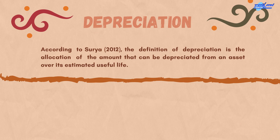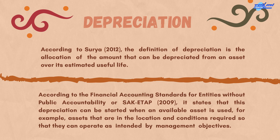Depreciation. According to Surya, the definition of depreciation is the allocation of the amount that can be depreciated from an asset over its estimated useful life. According to the financial accounting standards for entities without public accountability, depreciation can be started when an available asset is used — for example, assets that are in the location and condition required so that they can operate as intended by management objectives.